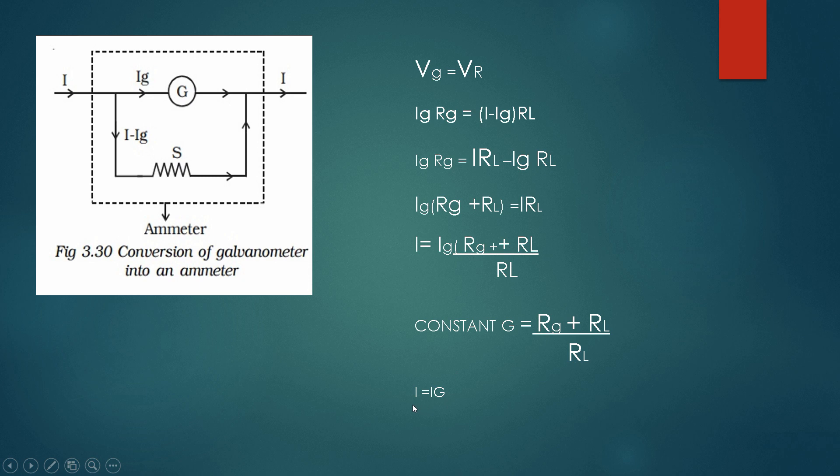So it will become input supply current is directly proportional to galvanometer current. So this is how it works. Normally, this ammeter is connected in series into the circuit to measure the current.